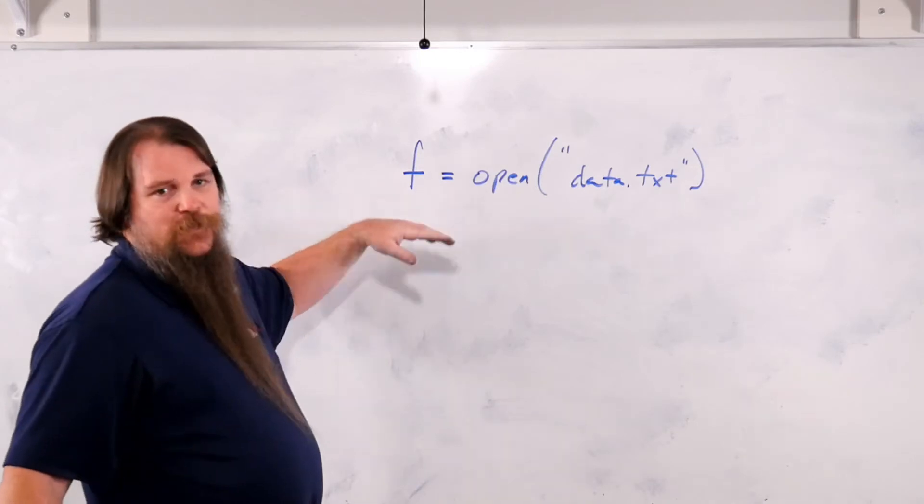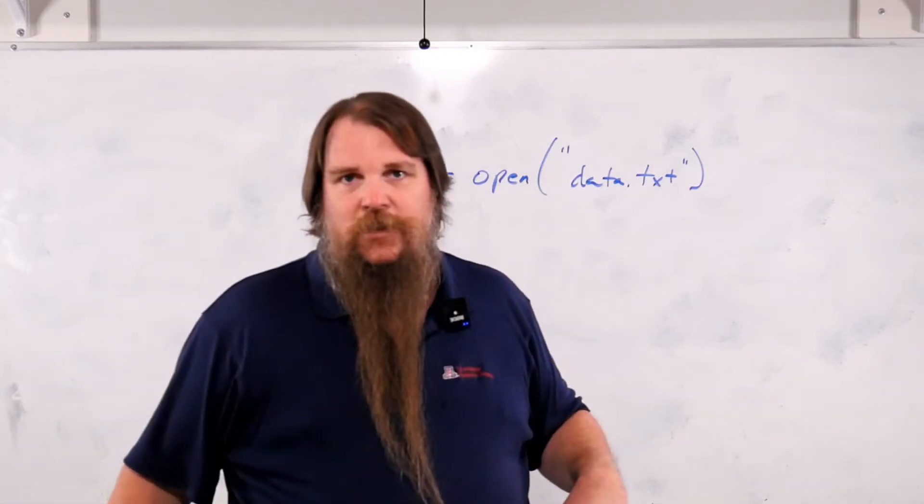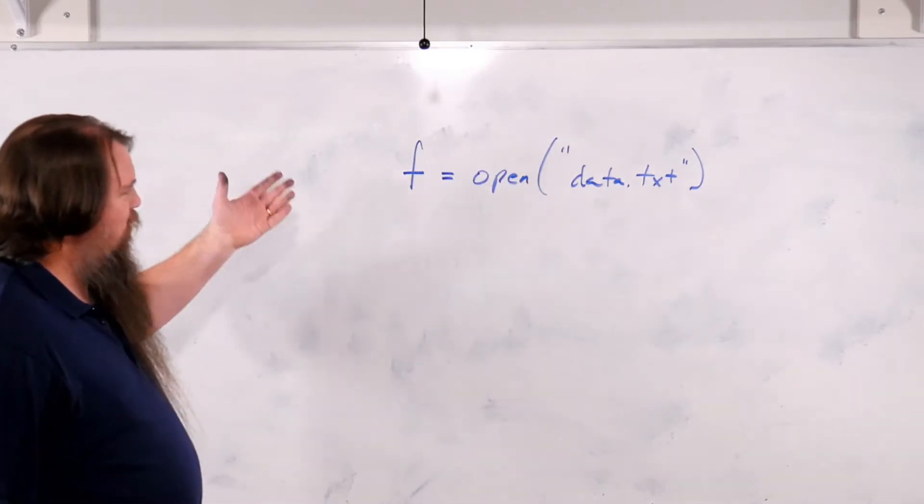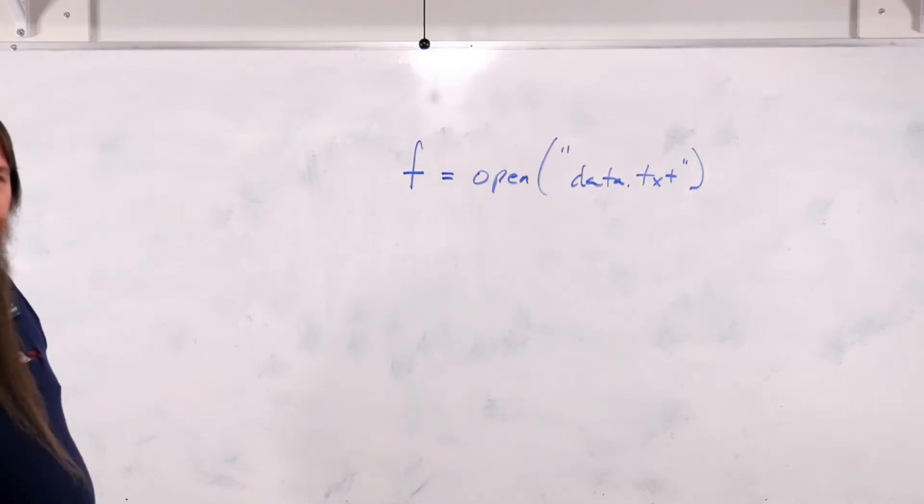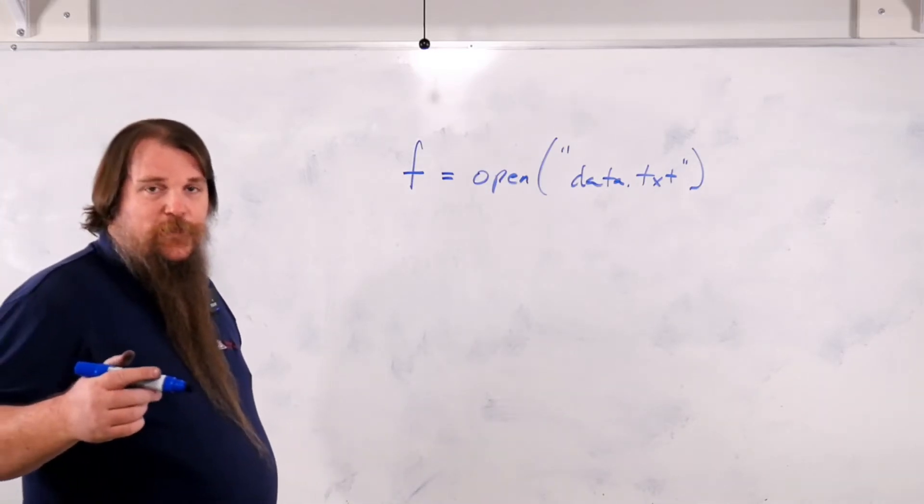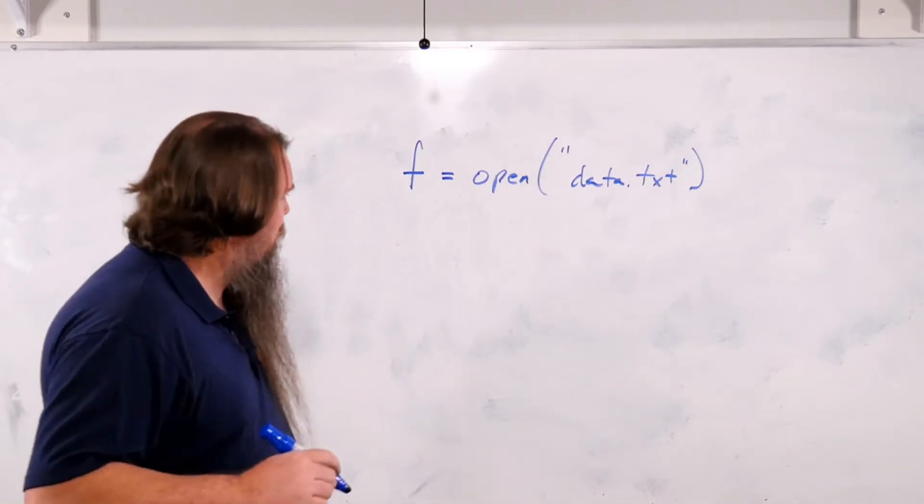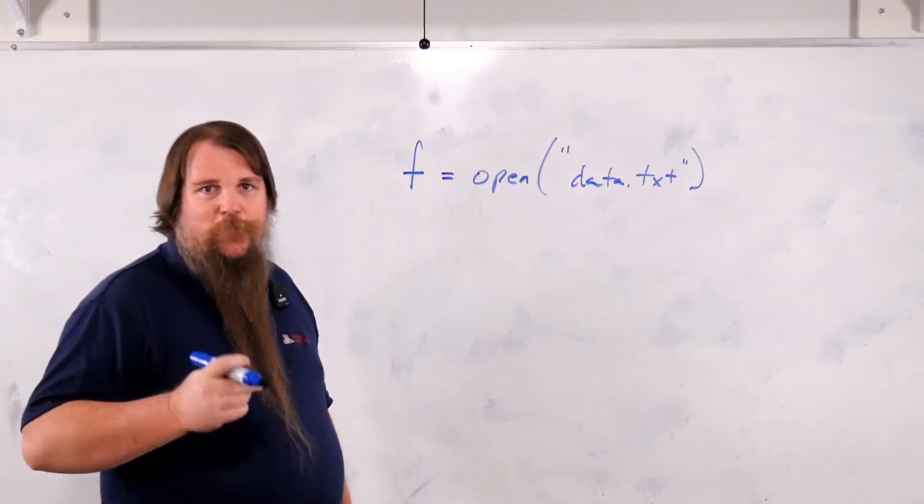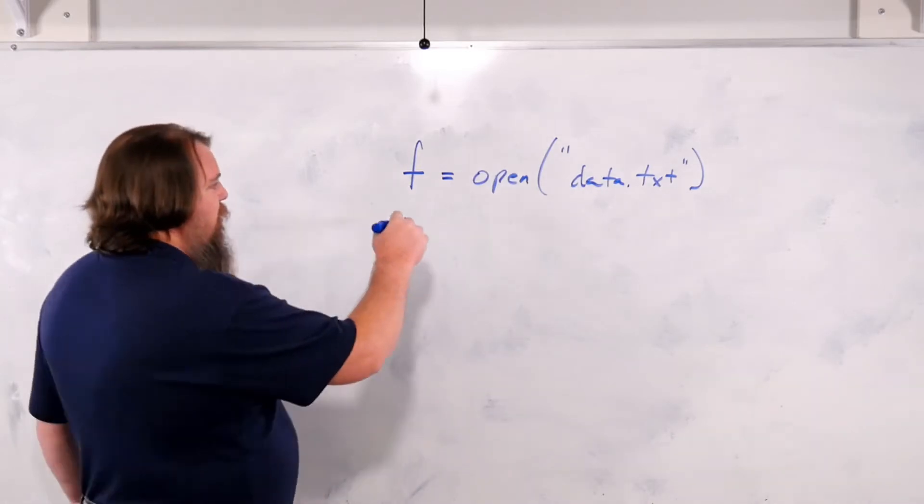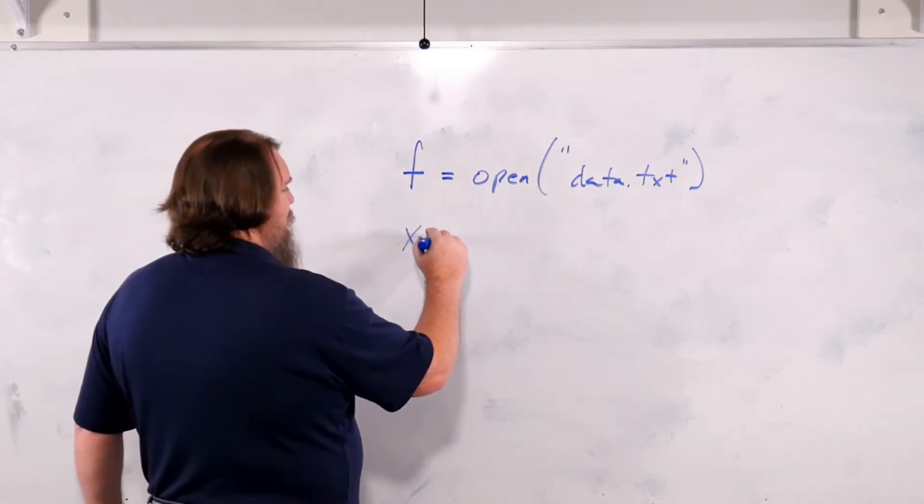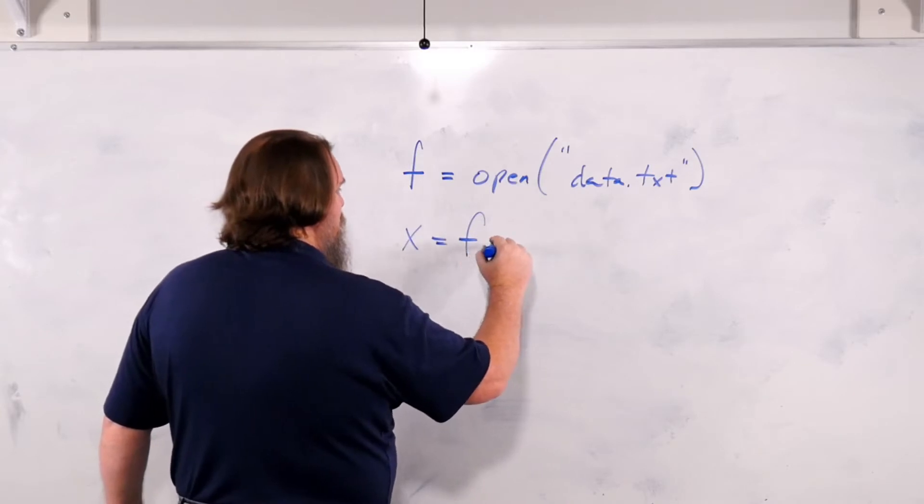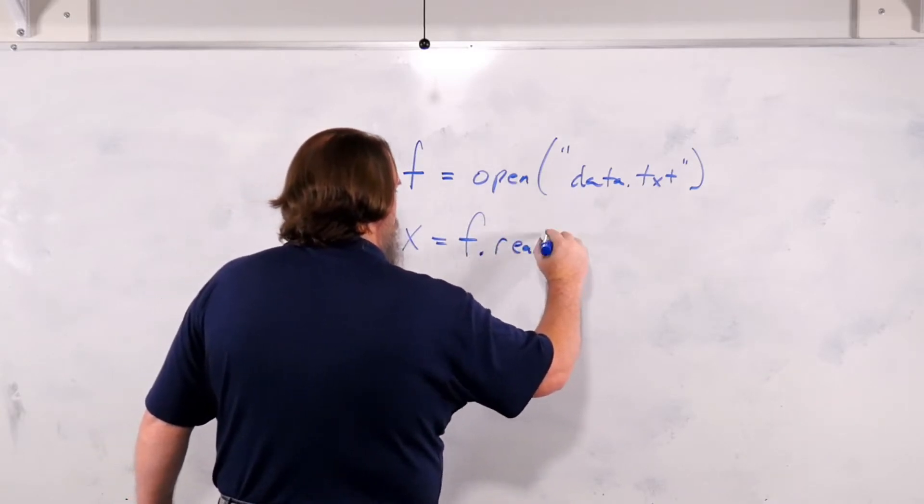Now, f is going to be what's called a file object. It's an object that represents this open file as we read it. Now, one of the ways that we'll be reading over files is that we'll be looping over them, but I haven't shown you loops yet. So right now I'm going to show you some of the more basic ones you can do. First of all, is that you can say x equals f dot readline.